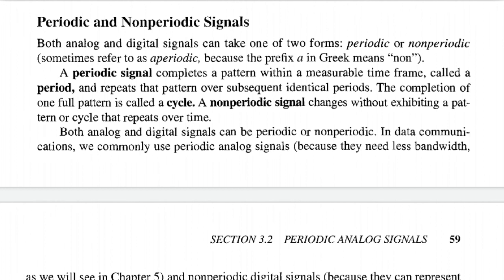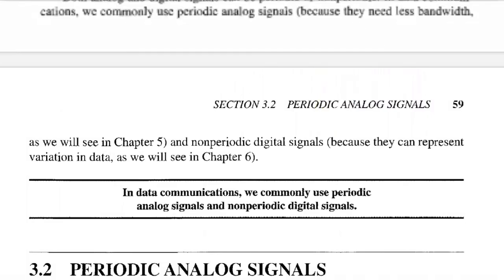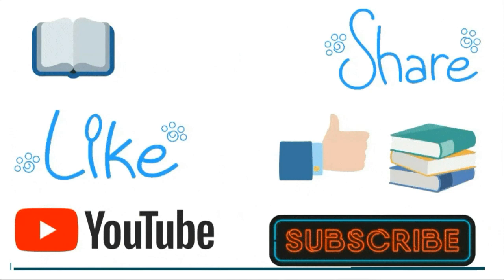Both analog and digital signals can be periodic or non-periodic. In data communication, we commonly use periodic analog signals because they need less bandwidth, and non-periodic digital signals because they can represent variation in data. In data communication, we commonly use periodic analog signals and non-periodic digital signals.